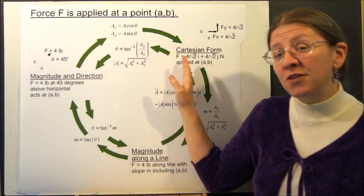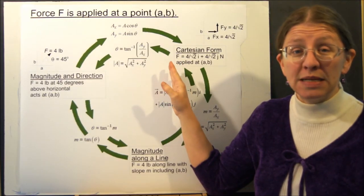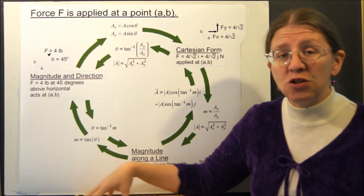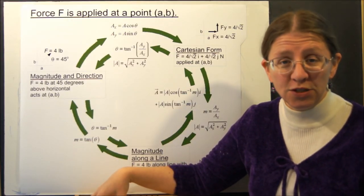Going from magnitude and direction to Cartesian form is just some basic trig. This is the kind of classification scheme I'm hoping you'll latch onto.